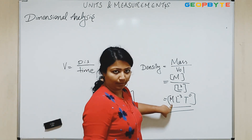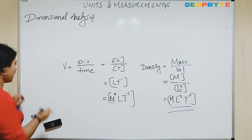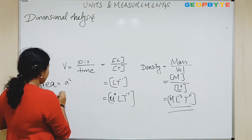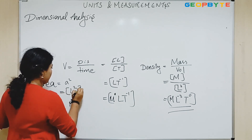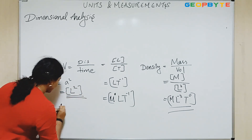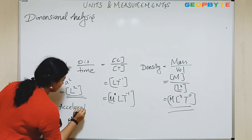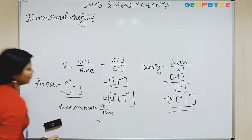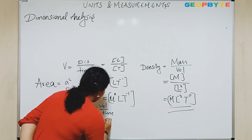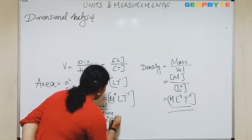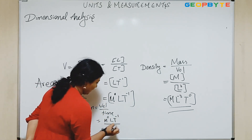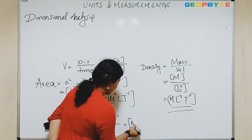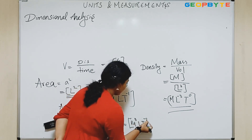Velocity is independent of mass. Density is independent of time. Now if I am considering area, I know area is L squared. And if I am taking acceleration, that is velocity by time — we know velocity is M to the power 0, L T to the power minus 1 — divided by T. So acceleration can be written as M to the power 0, L T to the power minus 2.